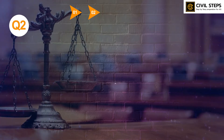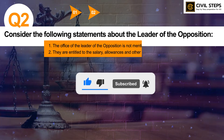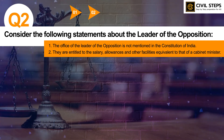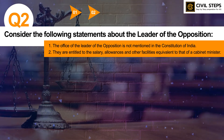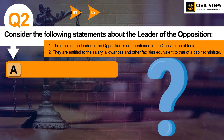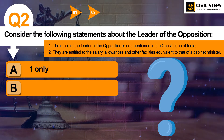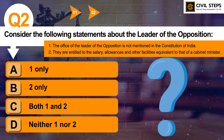Let us now discuss question number 2. Consider the following statements about the Leader of Opposition. First, the Office of the Leader of the Opposition is not mentioned in the Constitution of India. Second, they are entitled to the salary, allowances, and other facilities equivalent to that of a Cabinet Minister. Which of the statements given above is or are correct? Option A: 1 only. B: 2 only. C: both 1 and 2. D: neither 1 nor 2.